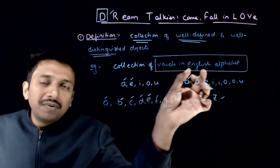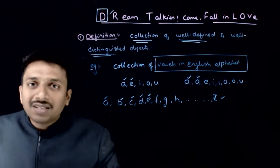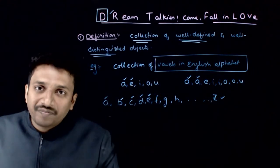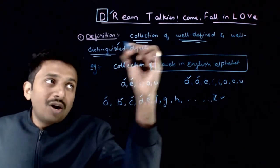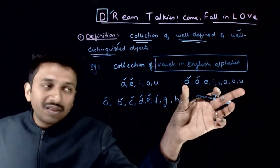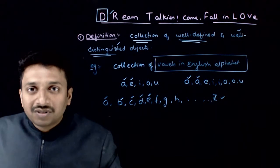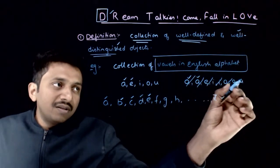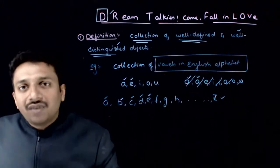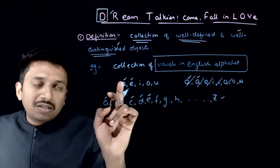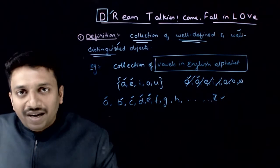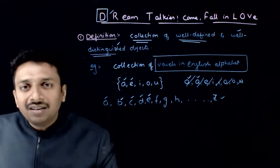In the collection of vowels in English language, there are five elements or five objects. If the well-distinguished property is not there, I could have written the set with more than five elements. So to cut down this ambiguity, the definition states that a set is a collection of well-defined and well-distinguished objects. Usually, we enclose a set in flower brackets — we enclose the objects of the set in flower brackets.